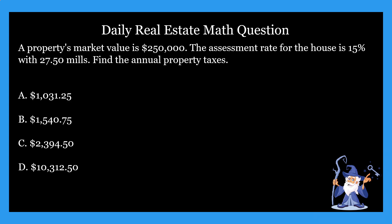So what is the answer for this one? Well, it's going to be A — that's right — it's just $1,031.25. So that's not bad for annual property taxes, that's pretty cheap. But anyway, how did we figure that out? Well, in this problem we have to find annual property tax — I'm going to underline that right there. So what we have to do is take the market value and multiply it by the assessment rate.